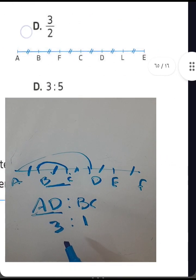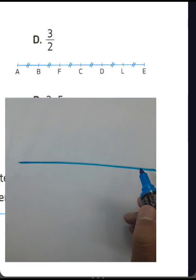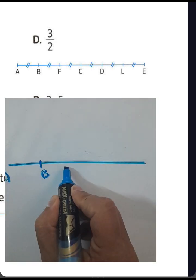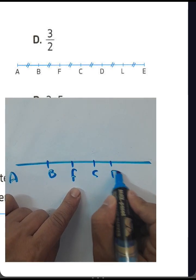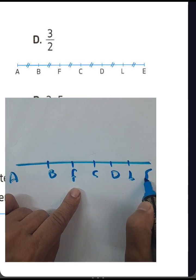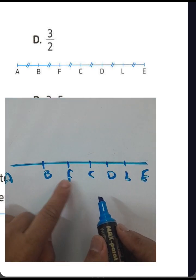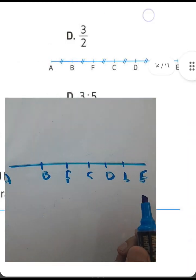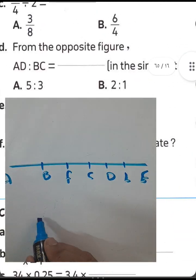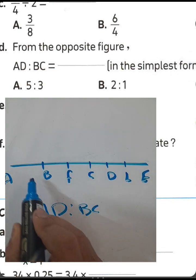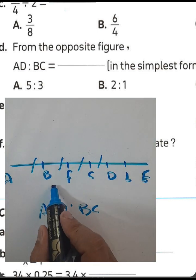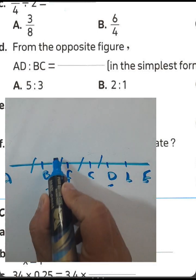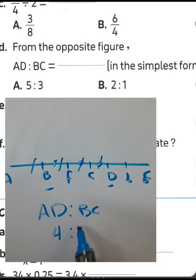Revisiting the figure — it has six parts, not five. The points are A, B, C, D, E. Find the ratio between AD and BC. From A to D: one, two, three, four — four parts. From B to C: one, two, three — three parts. The ratio is four to three.